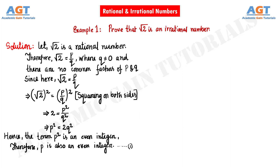In order to prove that root 2 is an irrational number, we first assume that root 2 is a rational number. So according to our assumption, if root 2 is a rational number, then root 2 should be equal to P divided by Q, where Q is not equal to 0 and there are no common factors of P and Q.